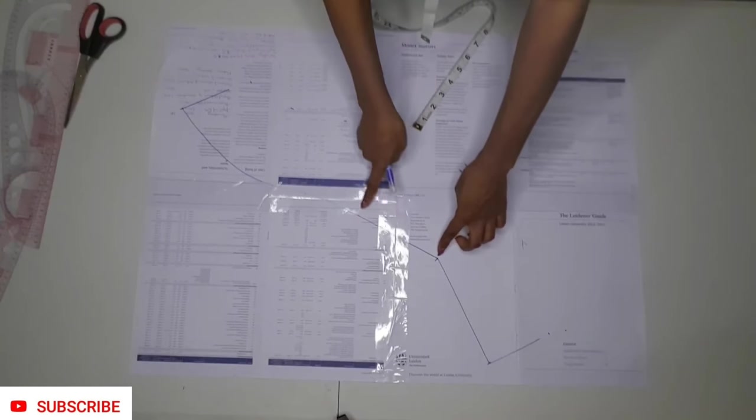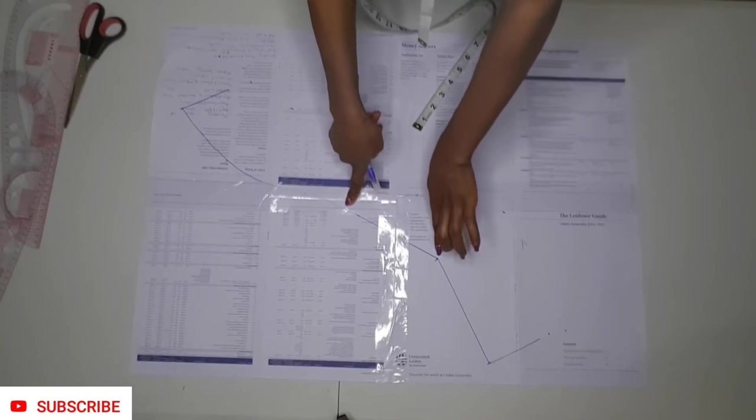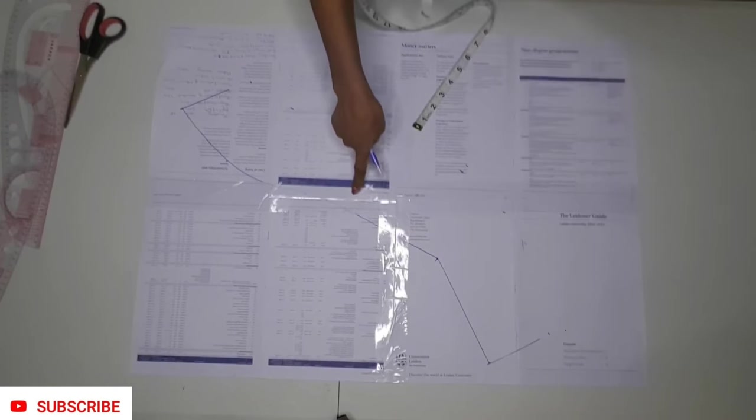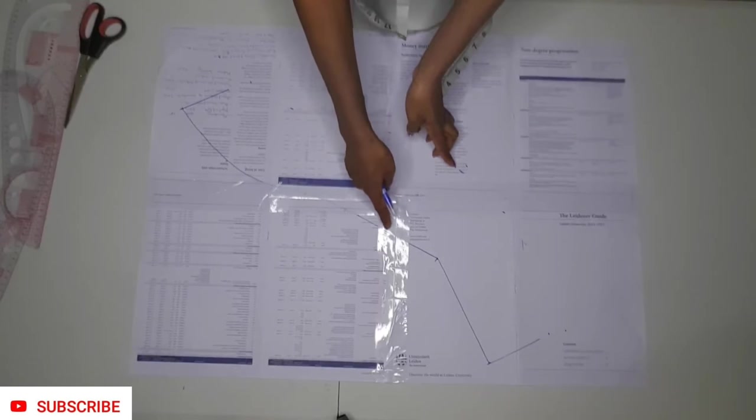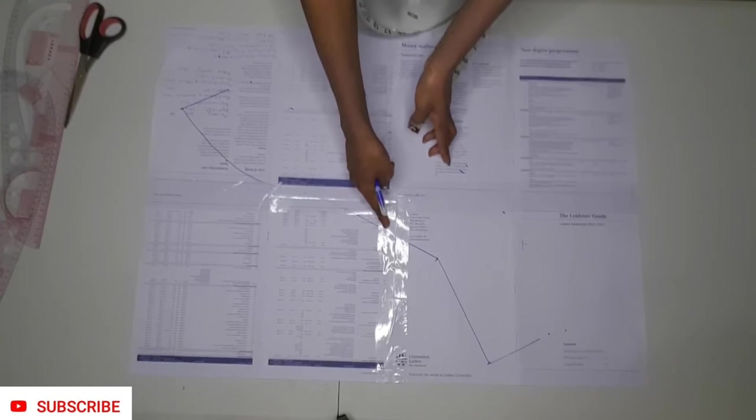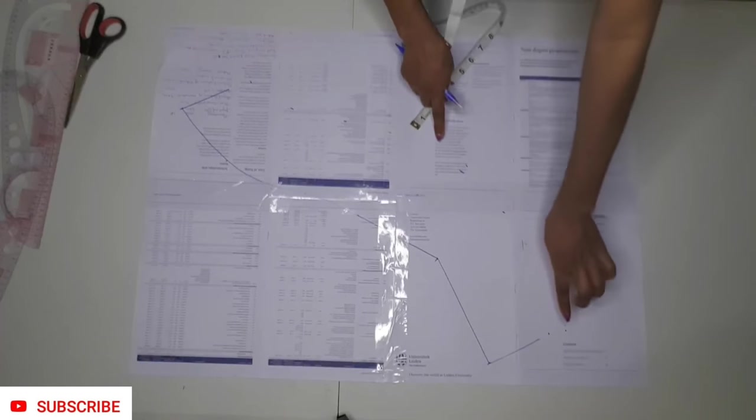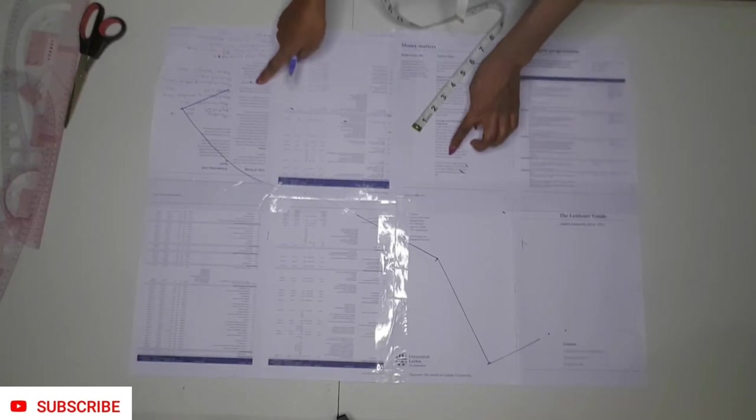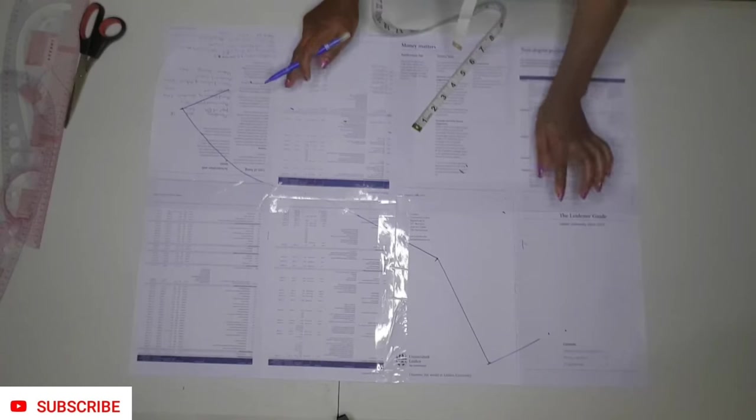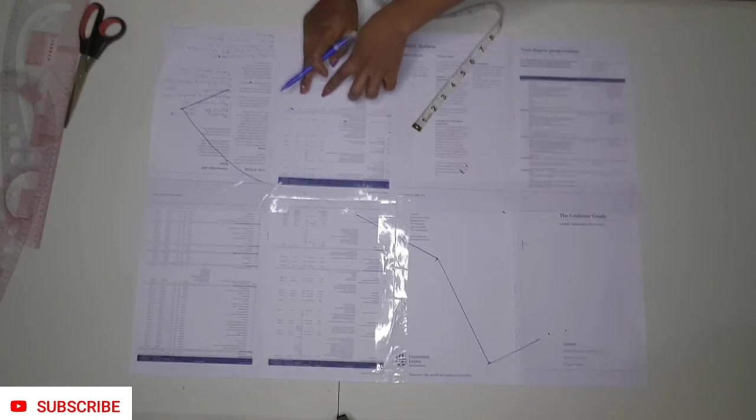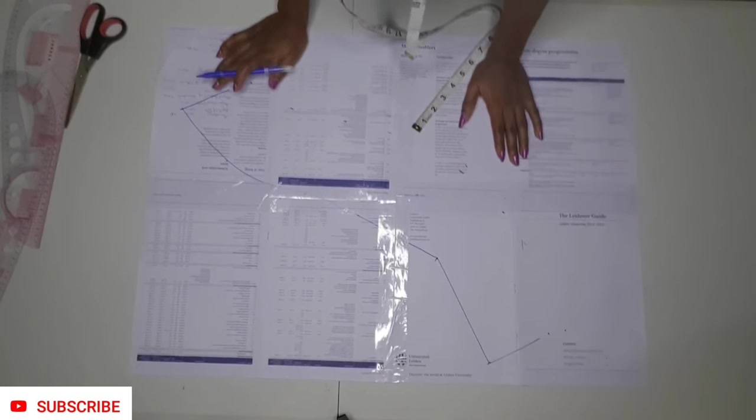Take note of the part where you have your sleeve and determine if you want your cape to cover the sleeve. Then you should make the width of your cape to be more than that of your sleeve. Now it's time to connect all the points that you have made, and that is going to form the shape of your cape.